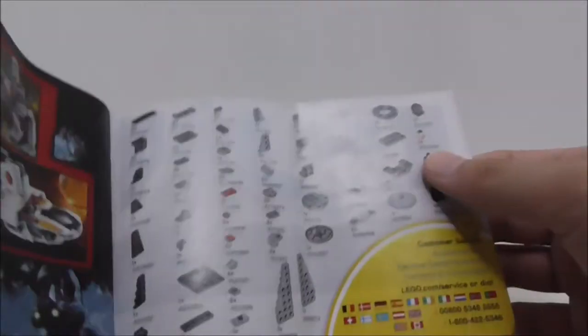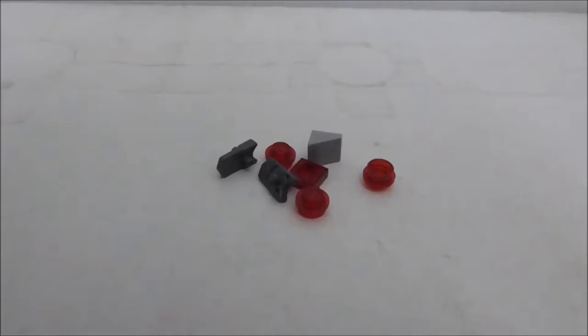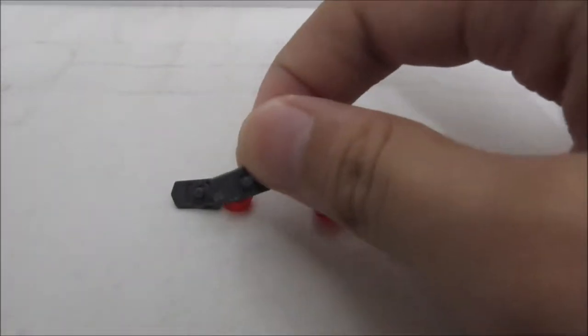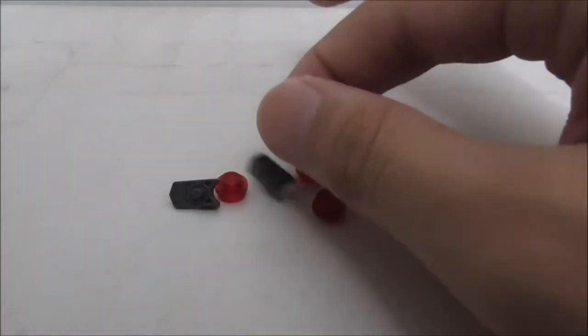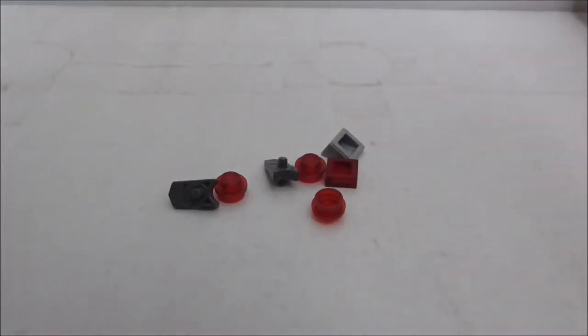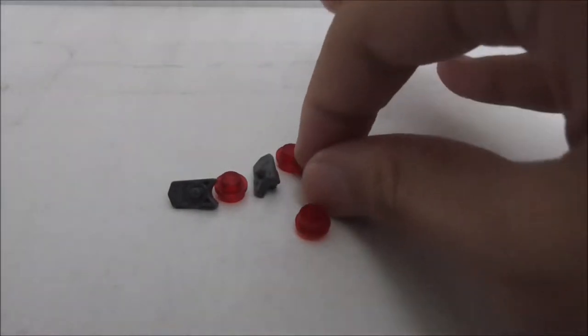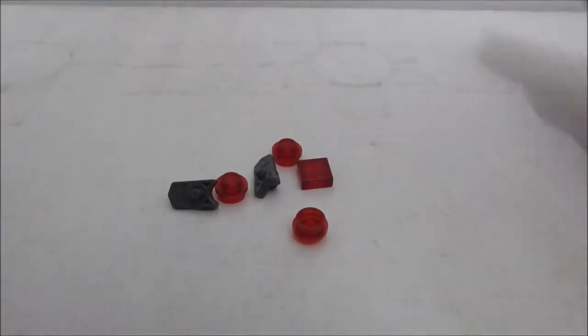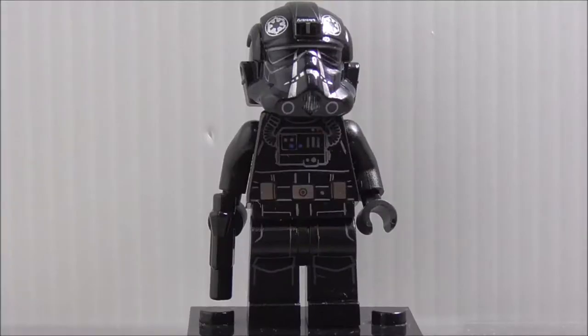These are the extra pieces here. It comes with three of these studs and two of these structure pieces, which I'm not sure if it's an error or intentional. You should have this towel piece and this cheese slope piece, but that's it for the extra pieces.